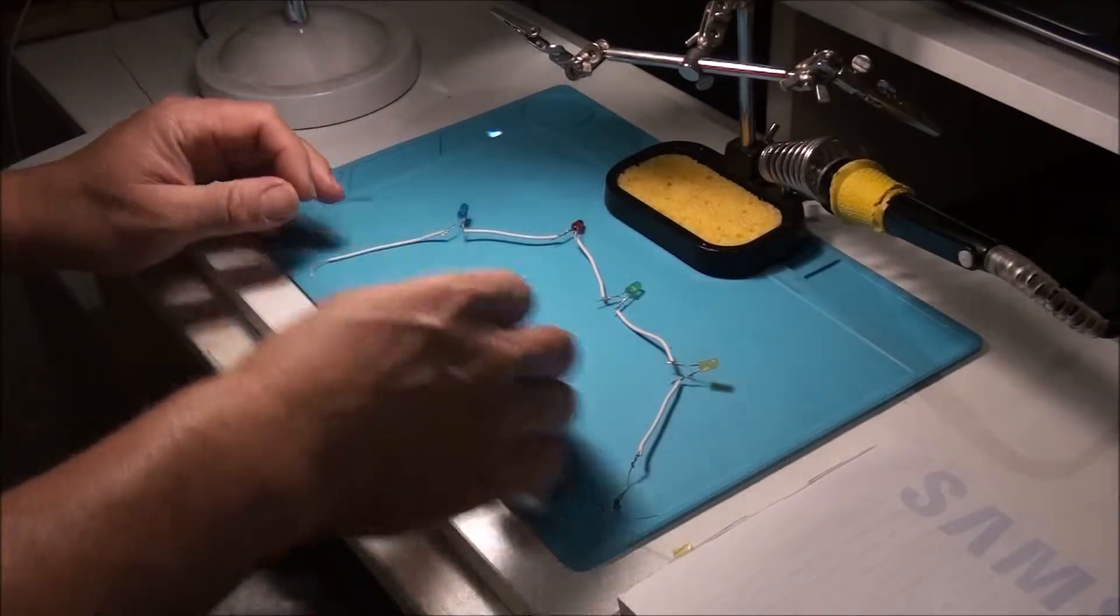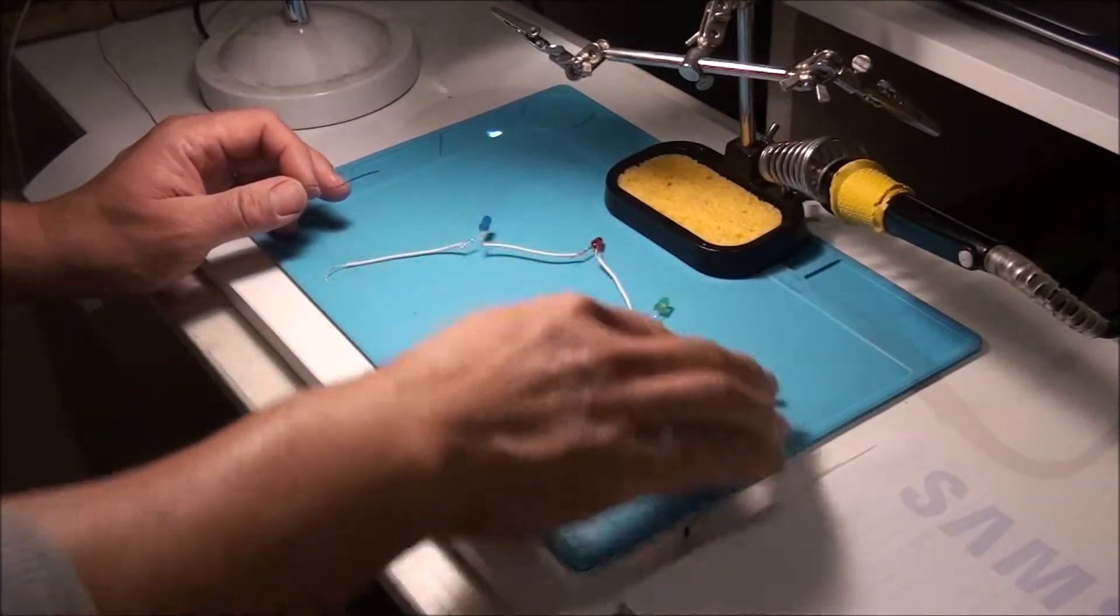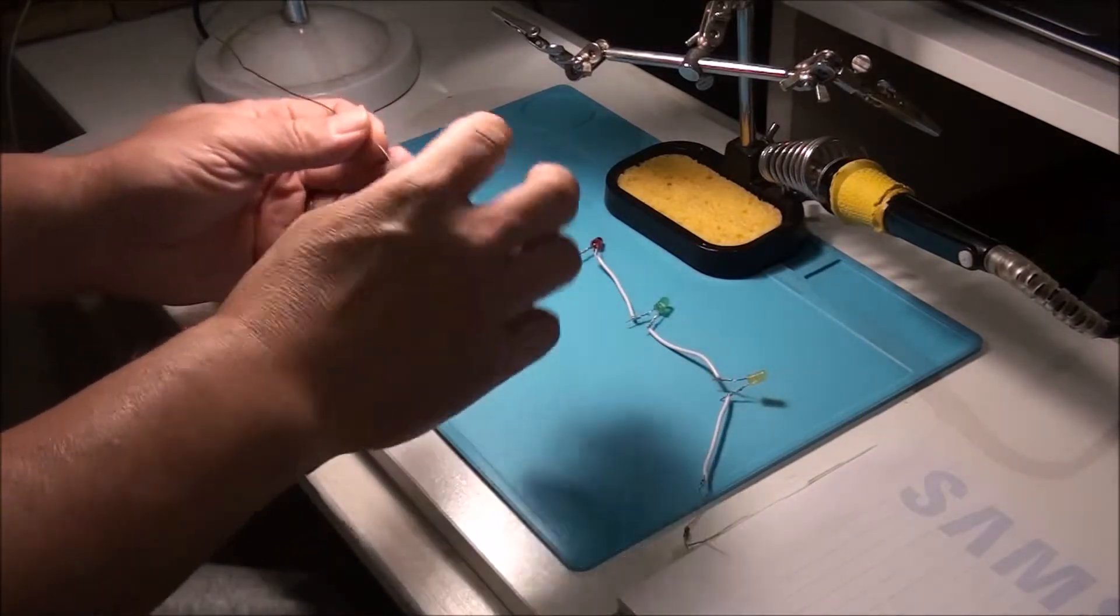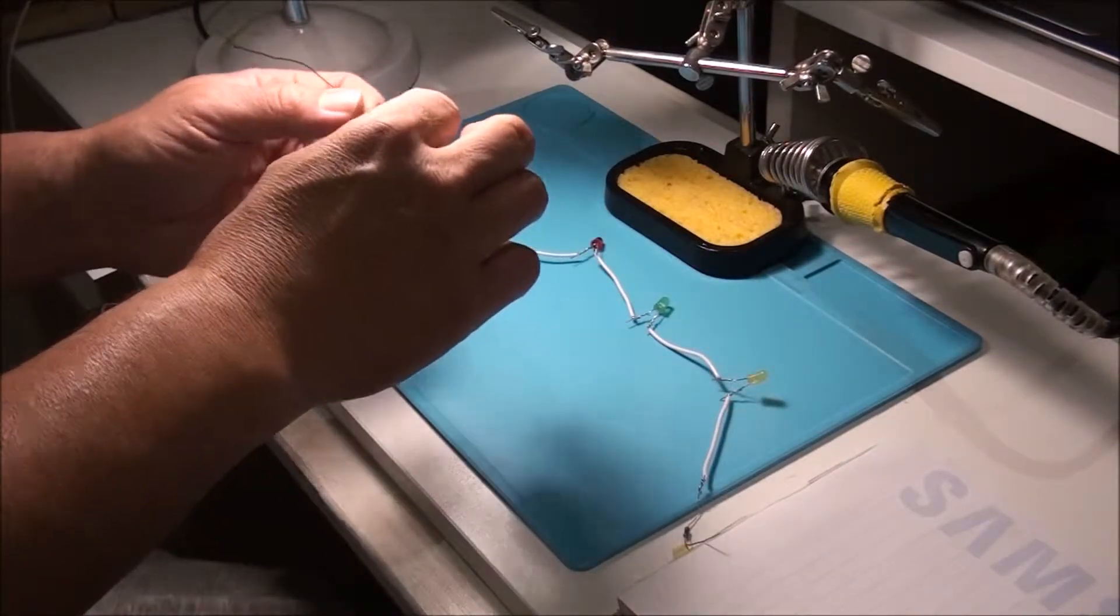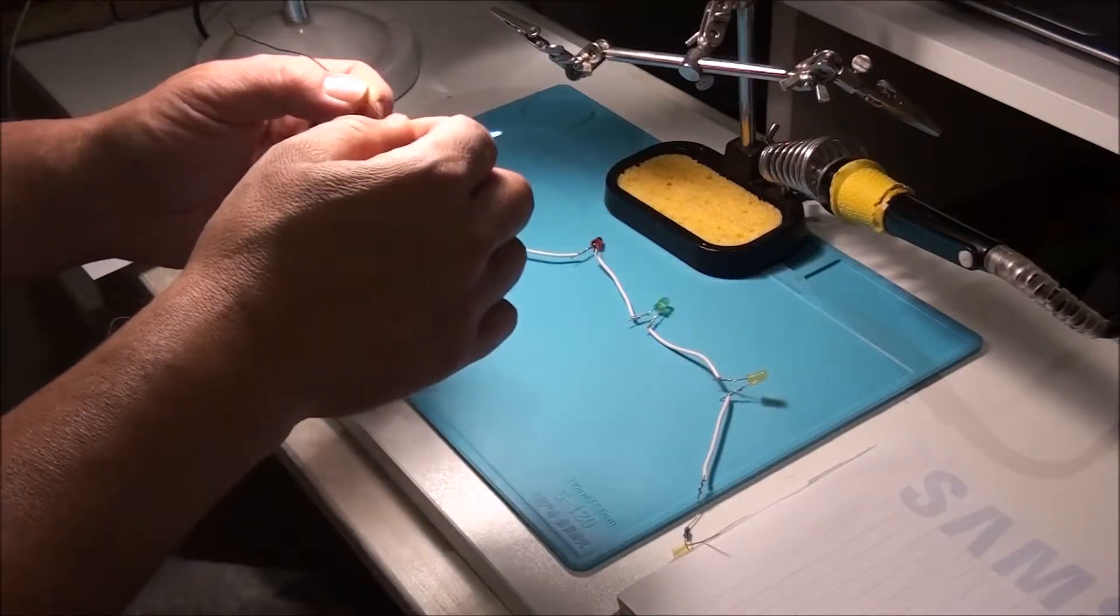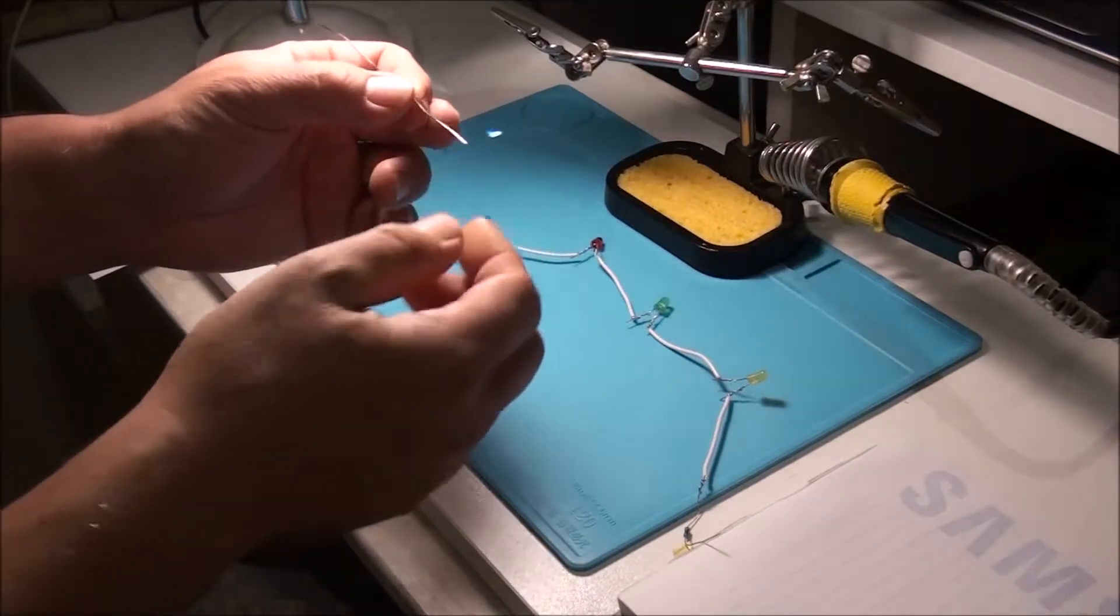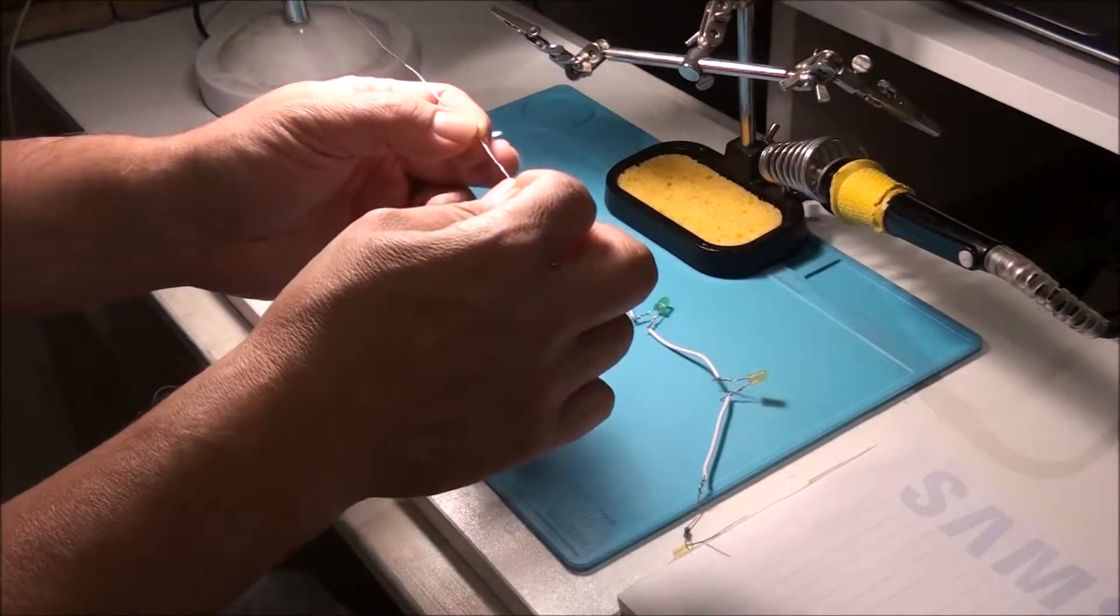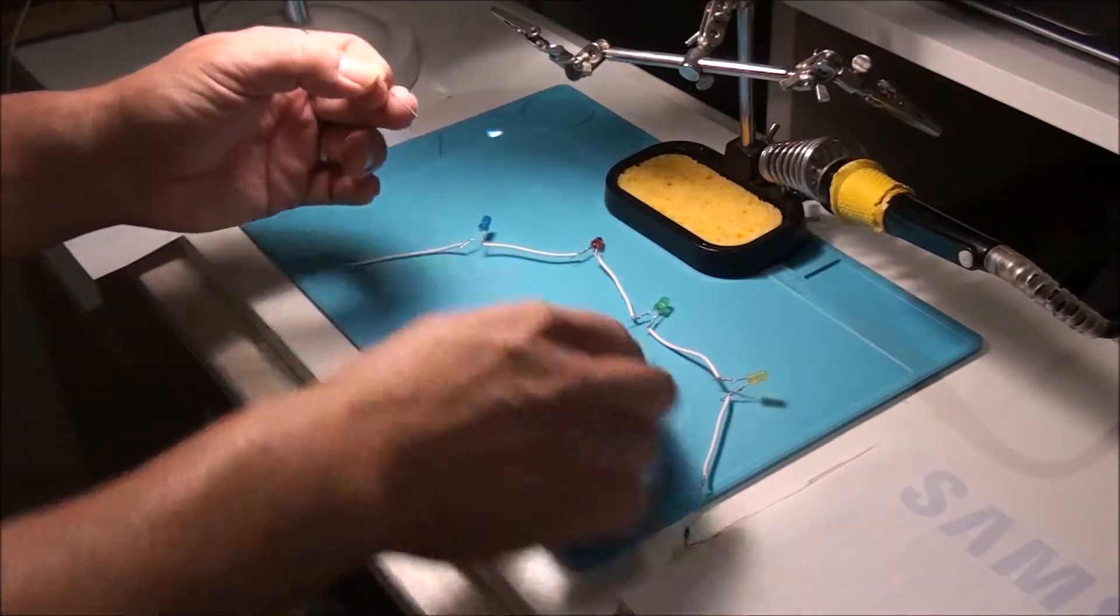So now I've got all my circuit here and I've got my solder. This one is 60% tin, 40% lead, and I prefer the thin solder wire for these kind of small circuits.